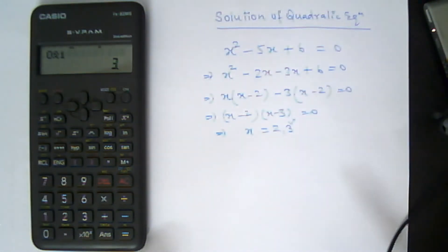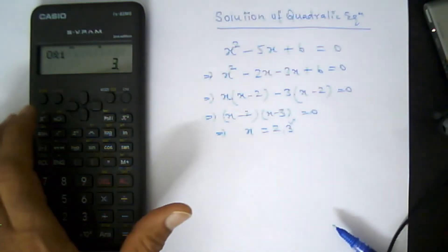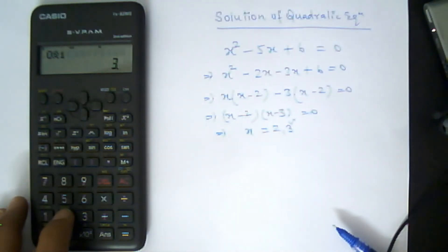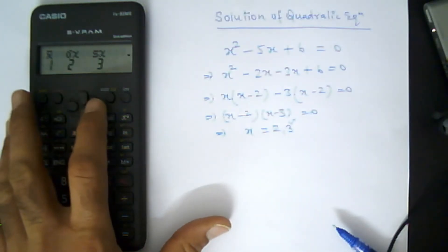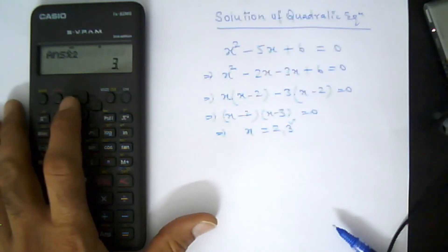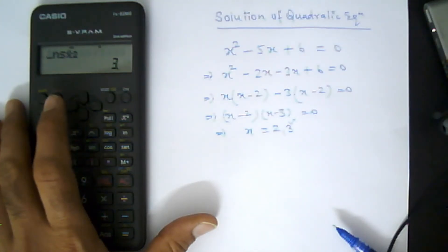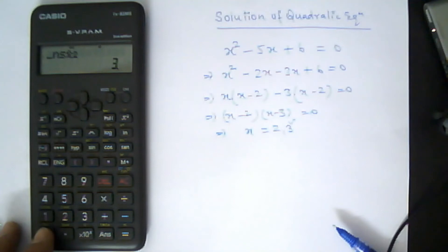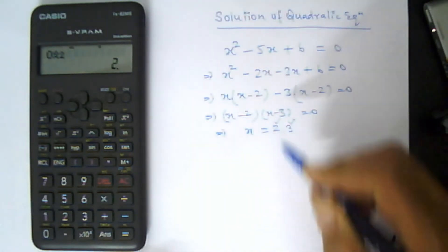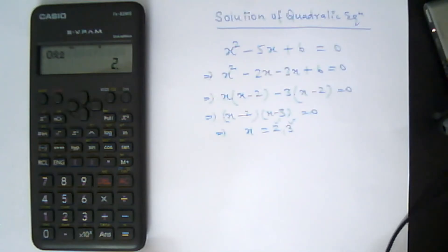Now we will find the second root. Press Shift again, then select left, press 2, go to the right arrow key 3 times, and select 2 from the keyboard. Navigate back to the left so that 'a' is blinking, type 0, and press equal. You get the second root, which is 2. This is how you can find the roots of any quadratic equation.